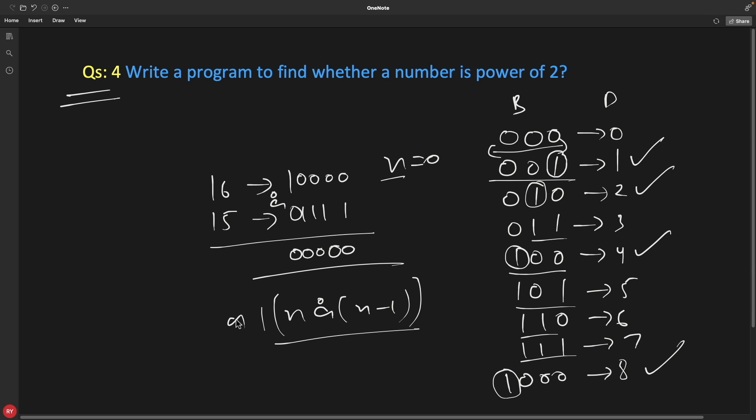So this is your whole formula now: if n is present, meaning n is not zero, then only you go ahead and apply this formula. Otherwise return from here saying that no, it's not power of 2. So n logical AND operation, because the result of this would be zero.